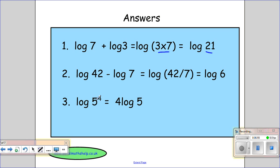Here we're minusing, and when we're minusing, we divide. So log of 42 minus log of 7 is the same as log of 42 over 7, which is log of 6.